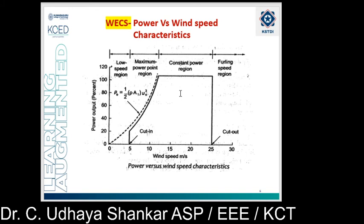The second region is the maximum power coefficient region. In this region, the rotor speed is varied with respect to wind speed so as to operate at the constant tip speed ratio corresponding to the maximum power coefficient CP max. In this range, the nature of the characteristics is close to that of the maximum power available in the wind. The turbine is operated at the maximum power output point using pitch control.